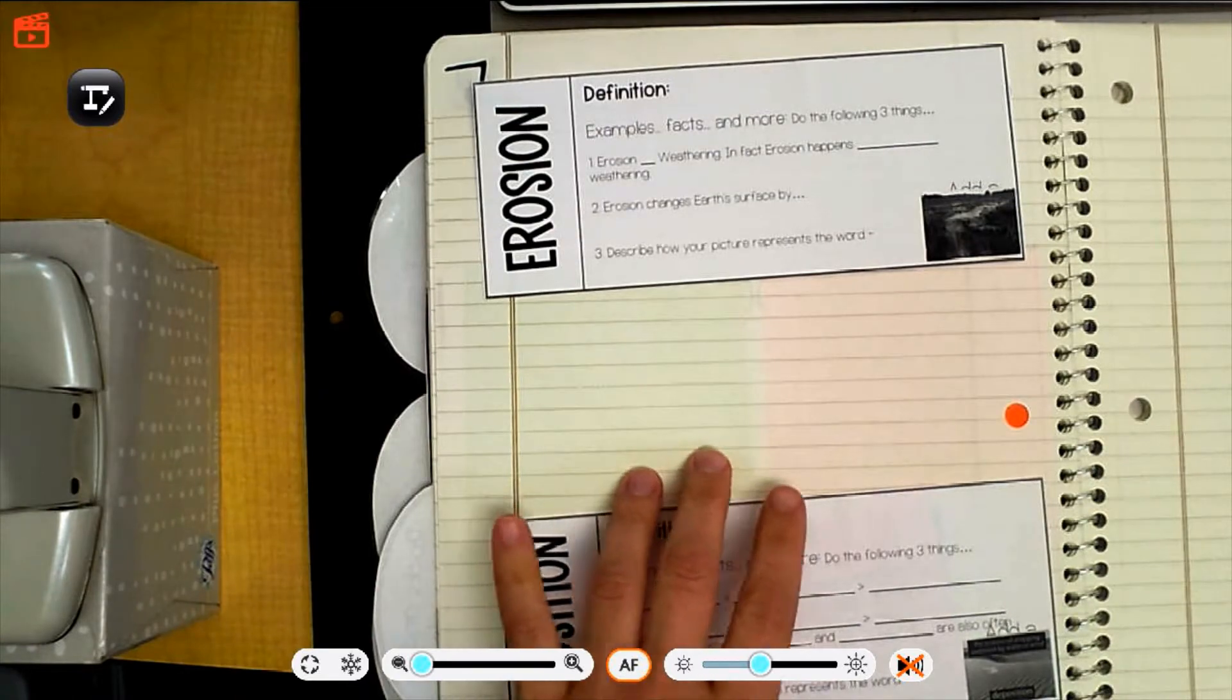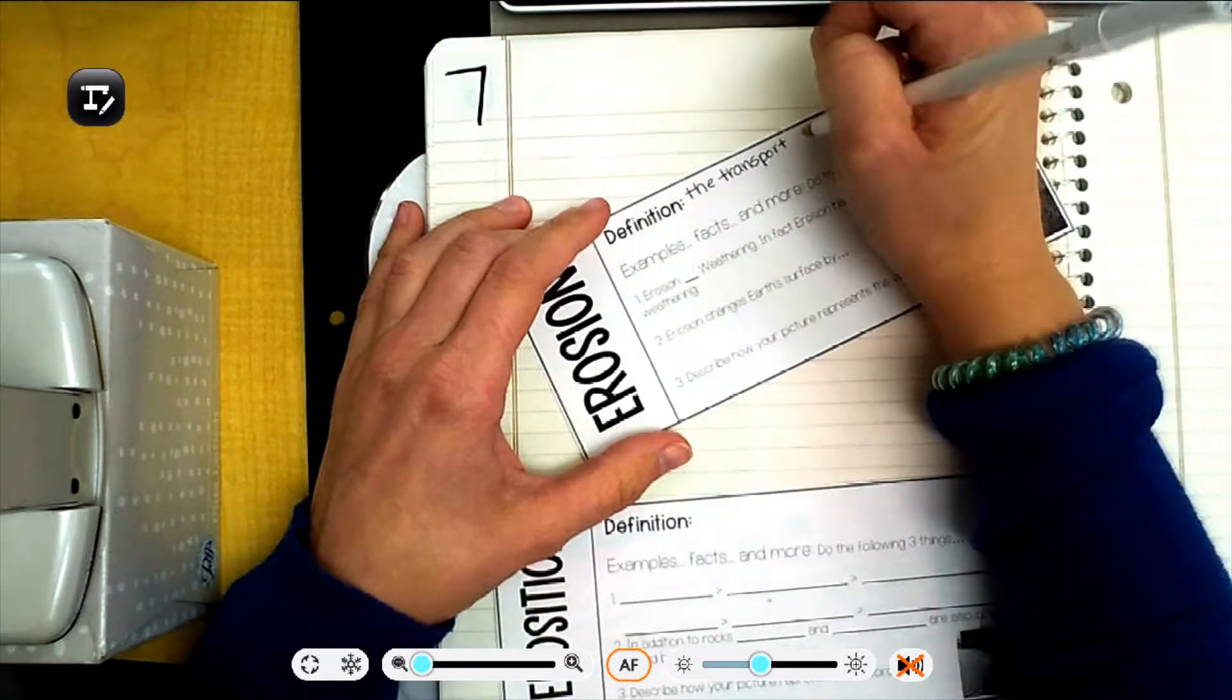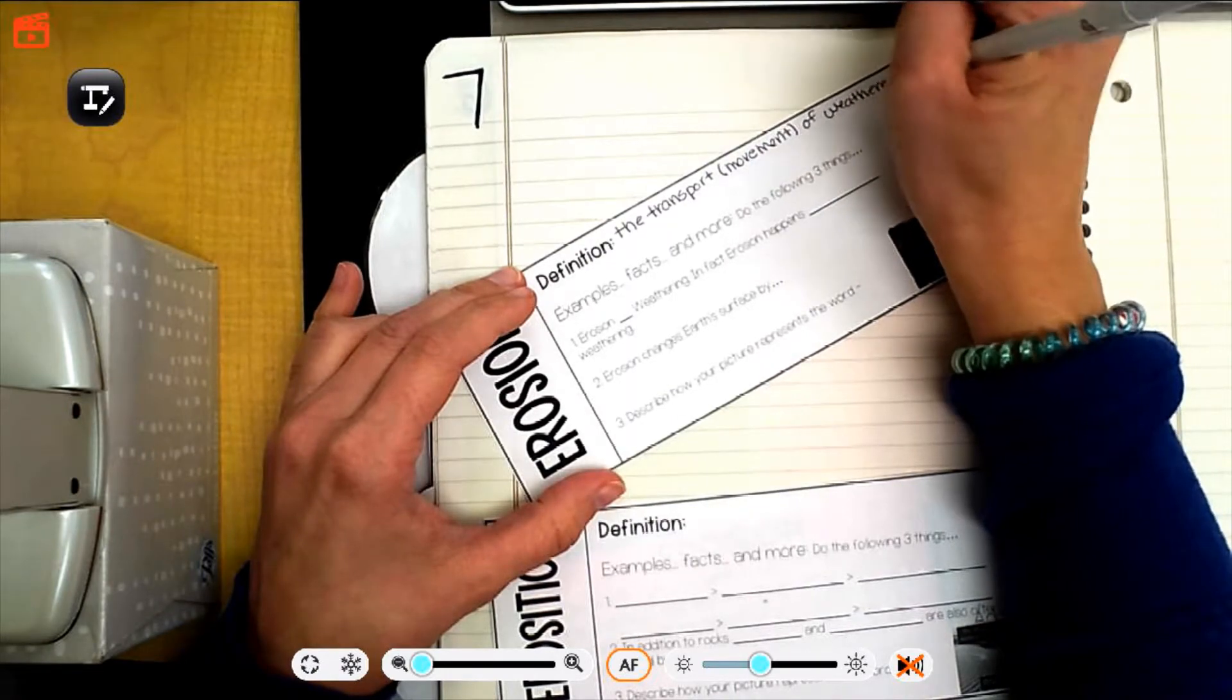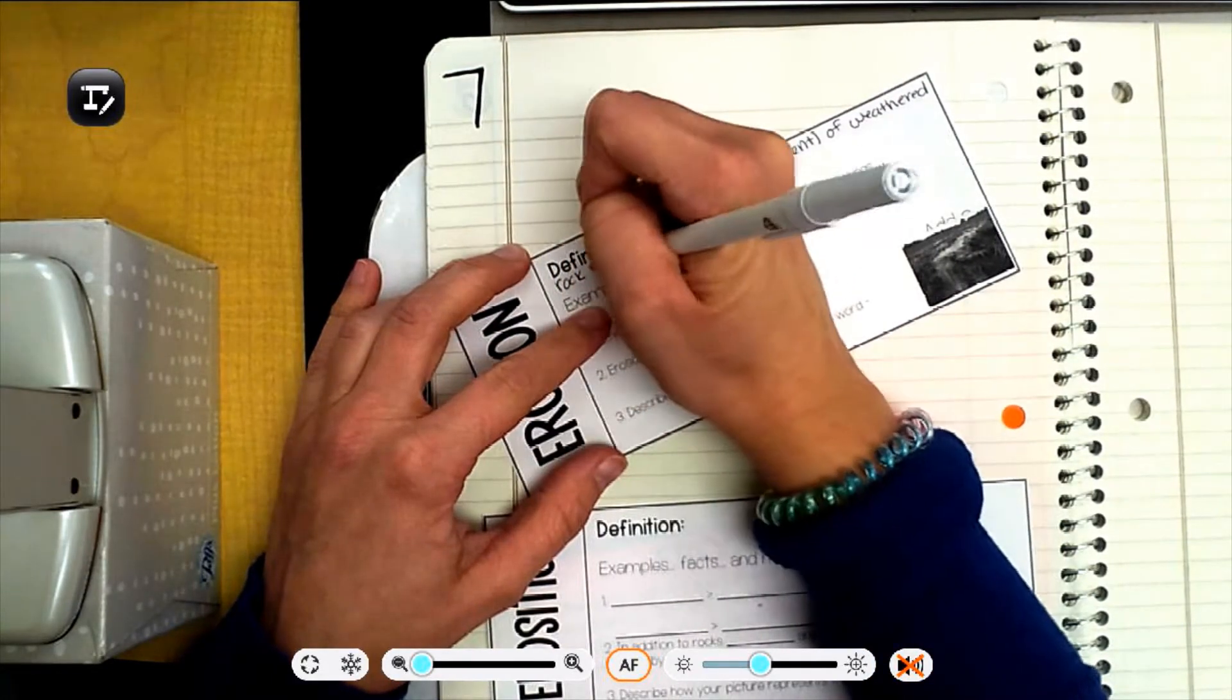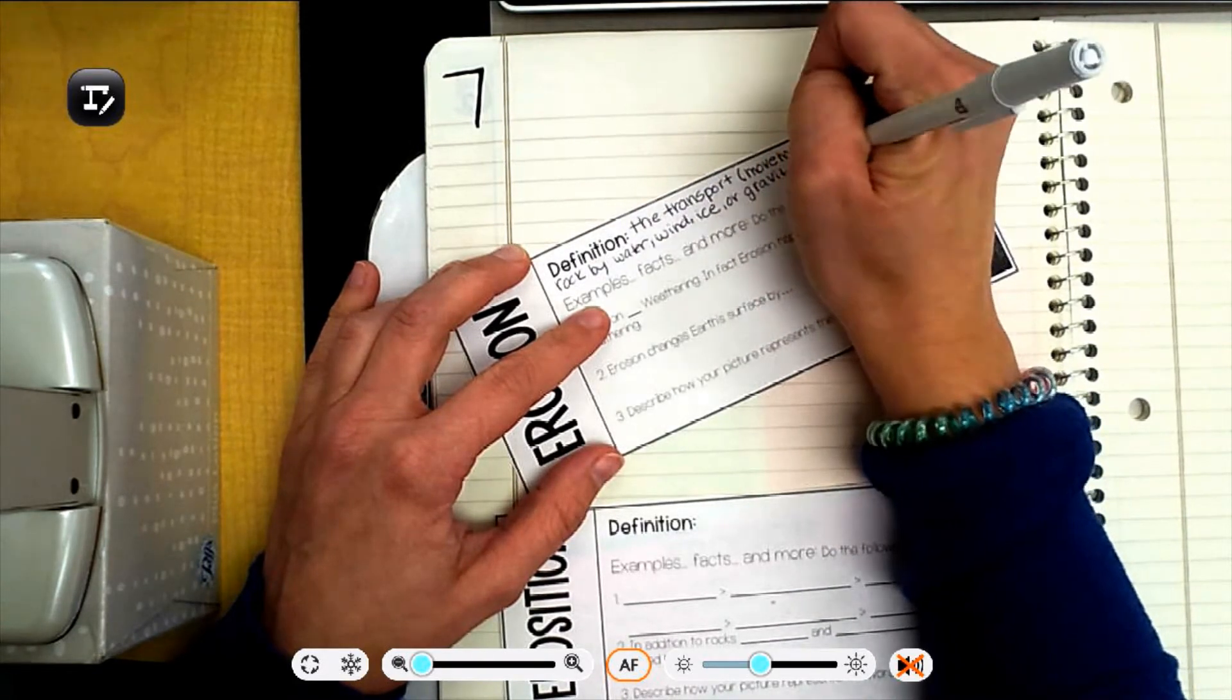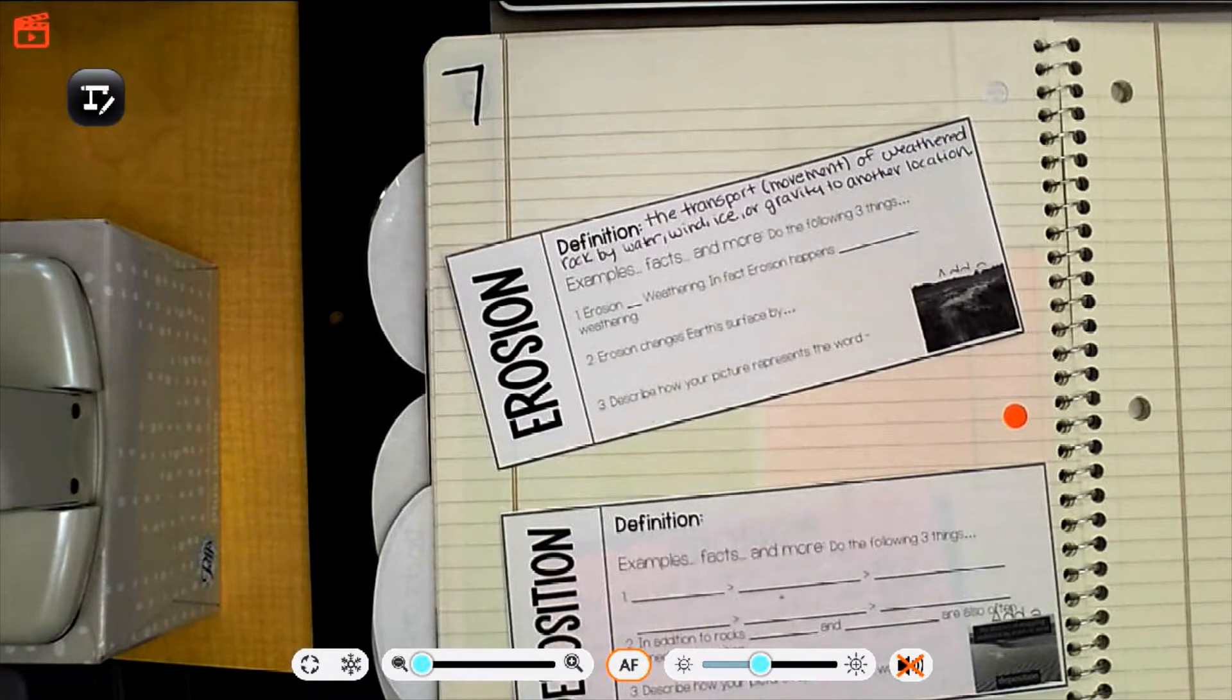So we're going to start with the word erosion. Okay, the erosion is the transport, it just means movement, like think about transportation, of weathered. So it's already broken down, remember our word yesterday, weathering. So after it's already been weathered, we're going to erode. So the transport of weathered rock by water, wind, ice, or gravity to another location. So even if that location is five feet away, it still counts as being eroded.